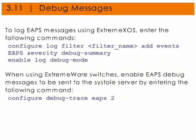Here's how to configure debug messages. To log EAPS messages using Extreme Exos, enter the following commands: configure log filter, filter name, add events EAPS severity debug-summary; enable log debug-mode. When using ExtremeWare switches, enable EAPS debug messages to be sent to the SYSLOG server by entering the following command: configure debug-trace EAPS 2.